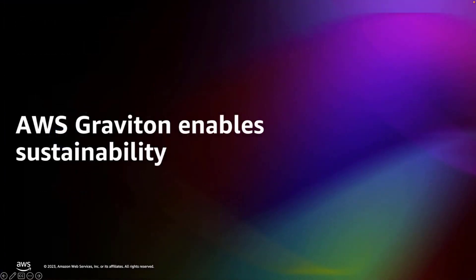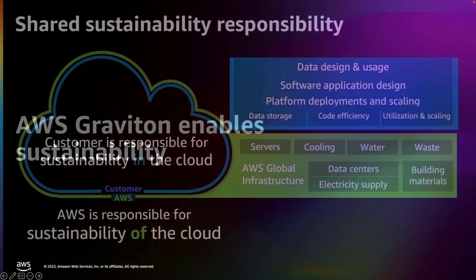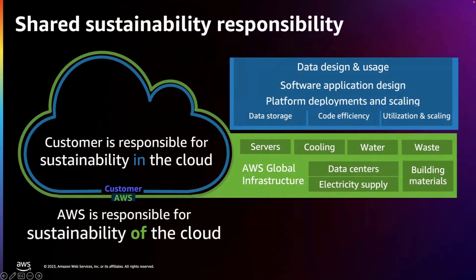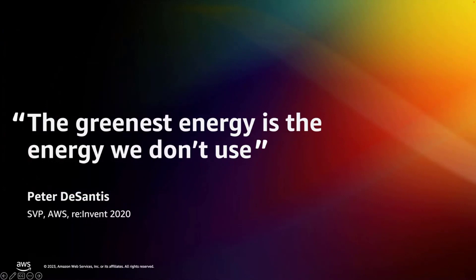Let's talk about how AWS Graviton enables sustainability through some real customer examples. Keep in mind, sustainability is a shared responsibility — just as you're familiar with the security shared responsibility model, the same applies for sustainability. AWS is responsible for optimizing the sustainability of the cloud, delivering efficient shared infrastructure, water stewardship, and sourcing renewable power. Customers are responsible for sustainability in the cloud: optimizing workloads and resource utilization, and minimizing the total resources required to deploy workloads. As Peter DeSantis, senior VP of AWS, said at re:Invent 2020: the greenest energy is the energy we don't use.